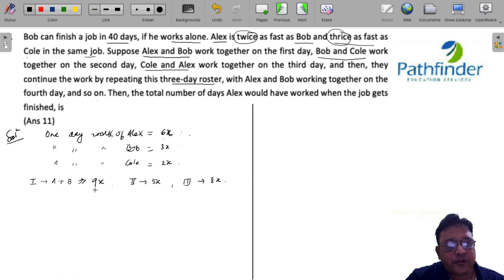And fourth day again, A and B will work together. So they will start repeating this in cycle. So in one cycle of three days, the quantum of work done by the three of them together will be 9x plus 5x plus 8x, that is 22x.